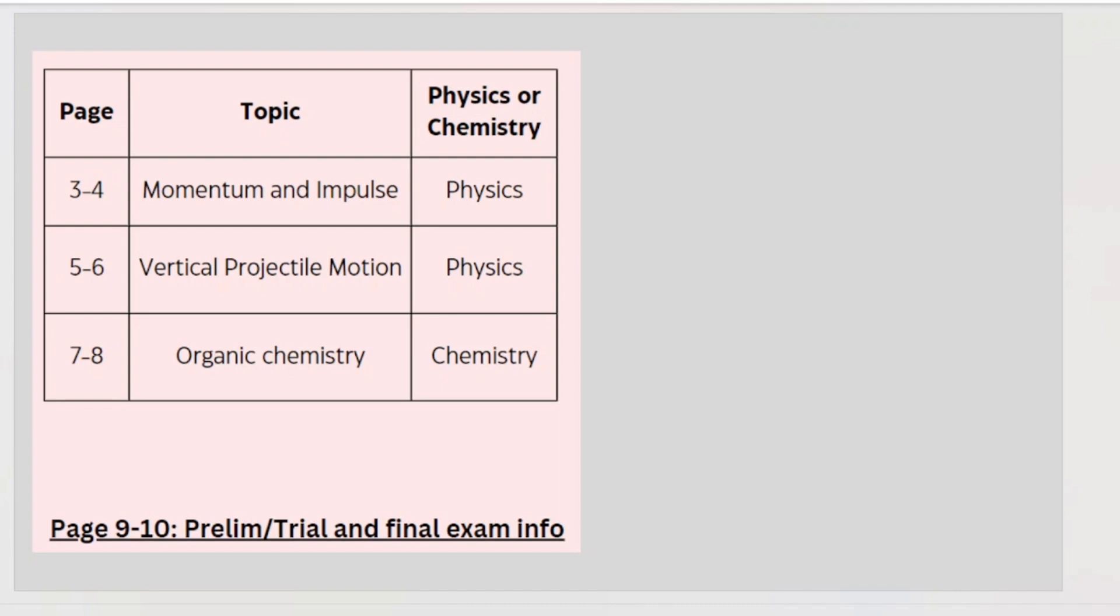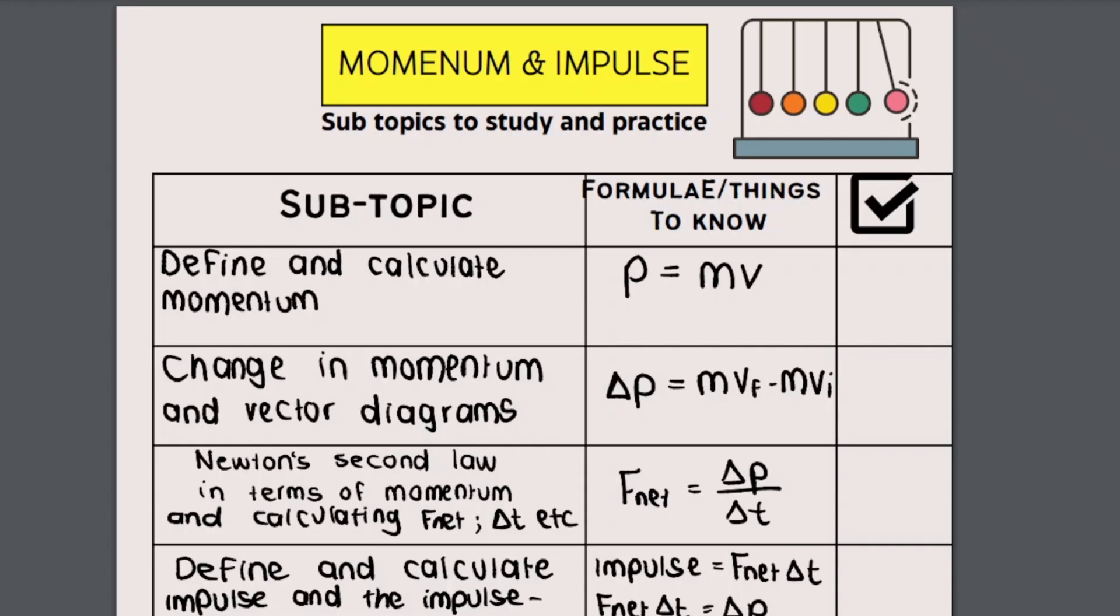We're going to be starting with the term one topics. Over here you can see that we have momentum and impulse, which is a physics topic so it's in paper one, vertical projectile motion, again a physics topic so paper one, and organic chemistry which is obviously a chemistry topic, paper two.